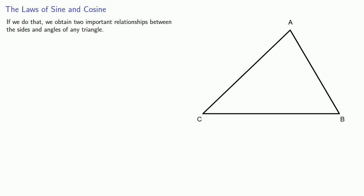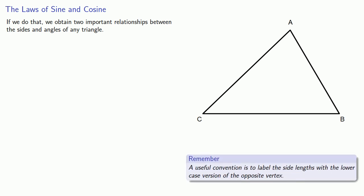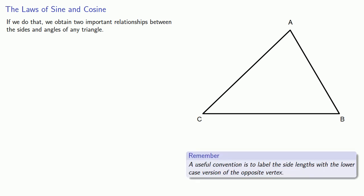So let's take triangle ABC. A useful convention is to label the side lengths with a lowercase version of the opposite vertex. So across from vertex capital A, I have side length lowercase a; across from vertex capital B, I have side length lowercase b; and across from vertex capital C, I have side length lowercase c. And we will refer to the measure of the angle by the capital letters and the length of the side by the lowercase letters.